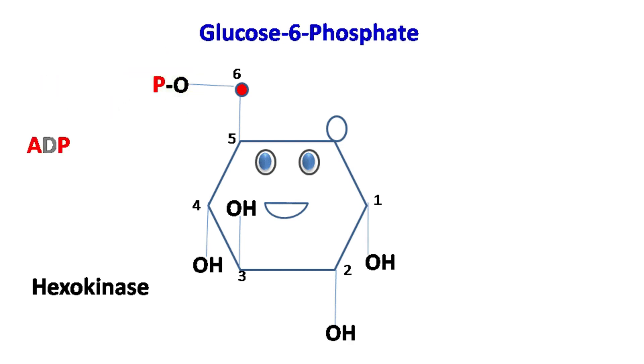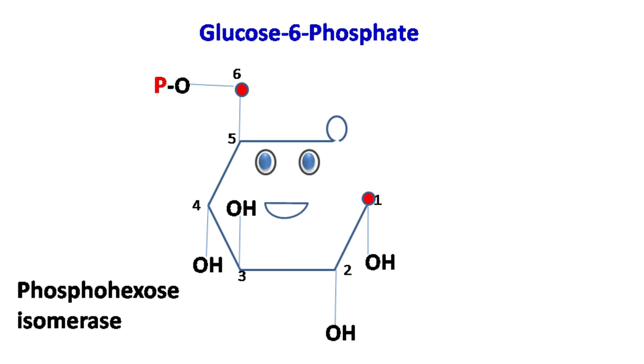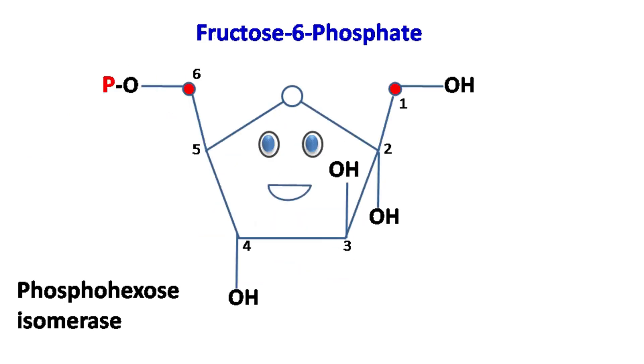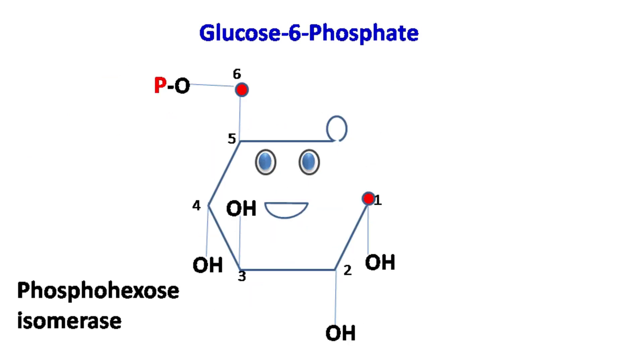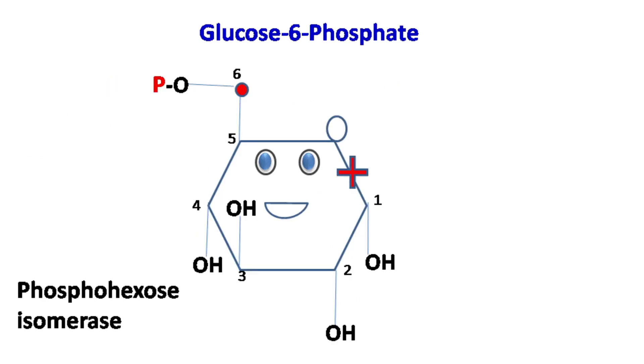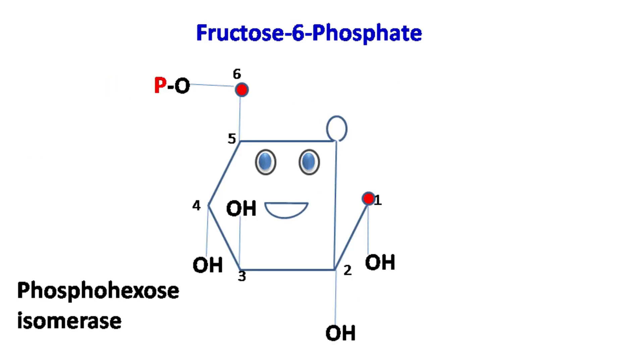In the next step, glucose-6-phosphate is converted into fructose-6-phosphate by the enzyme phosphohexoisomerase.